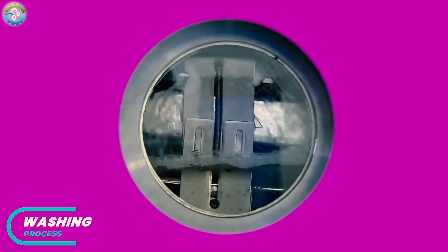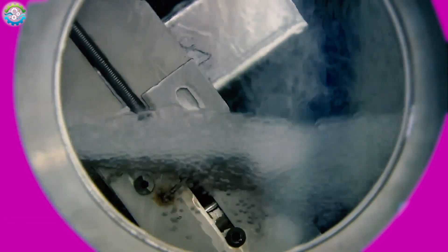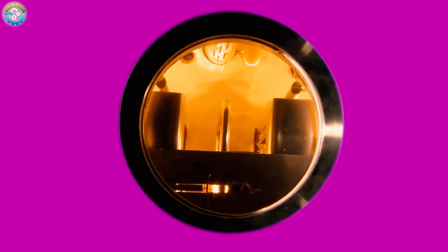In the next process, the blades are put into a washing machine, which cleans the blades with solvent liquid. This removes oils or other contaminants that could interfere with the quality of the final product.